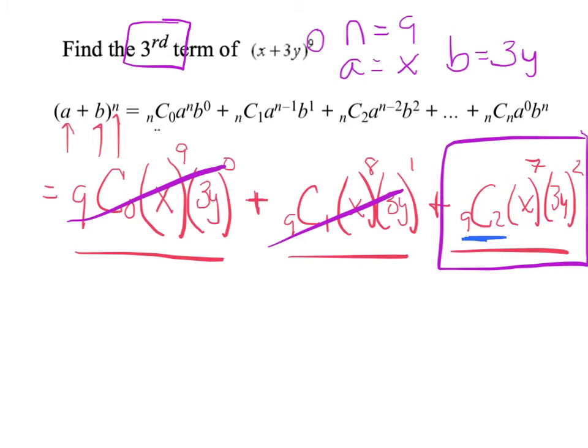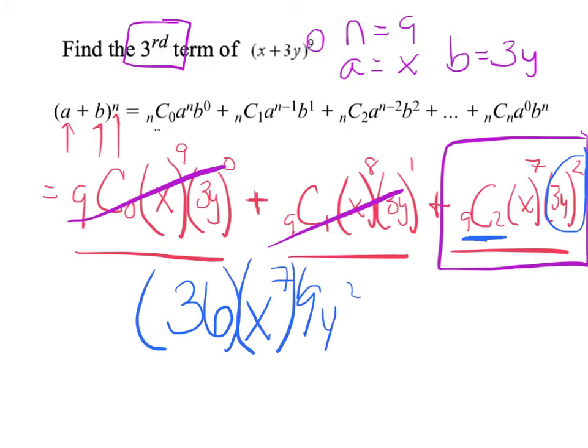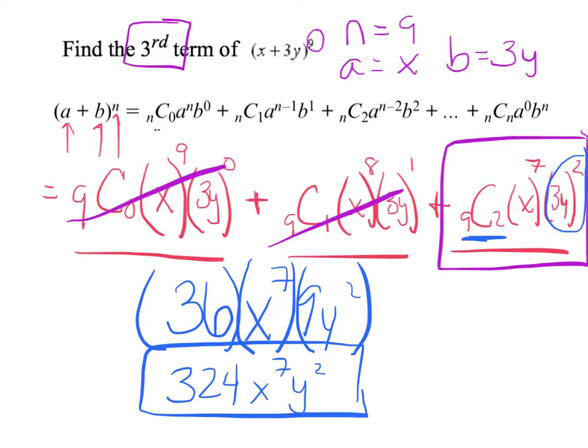And I just want the third term. I don't care about anything but this third term. So I can ignore these, and I just need to evaluate this term. So 9 choose 2, I don't have a calculator. I'm trying to do this in my head real quickly. I think you get 36. Double check me if I'm wrong. x to the 7th, and then 3y squared becomes 9y squared. And again, it's each of those terms, so I'm putting them in parentheses, and now I'm going to multiply. So as I clean that up, I've got 36 times 9, which I think is 324, x to the 7th, y squared. And it just wants that term. So there you have it. We had a single term, and we're good to move on.